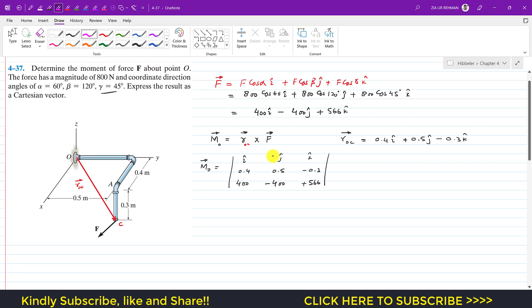So now to find the determinant, we have to consider this as plus i, this is minus j, and this is plus k, and we need to hide this and this. So this will be plus i into 0.5 into 566, then minus, minus 0.3 into 400. And we can write it like this.